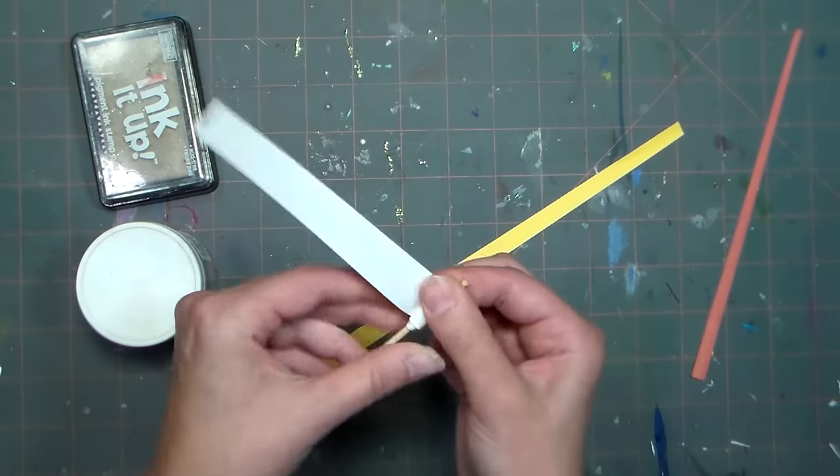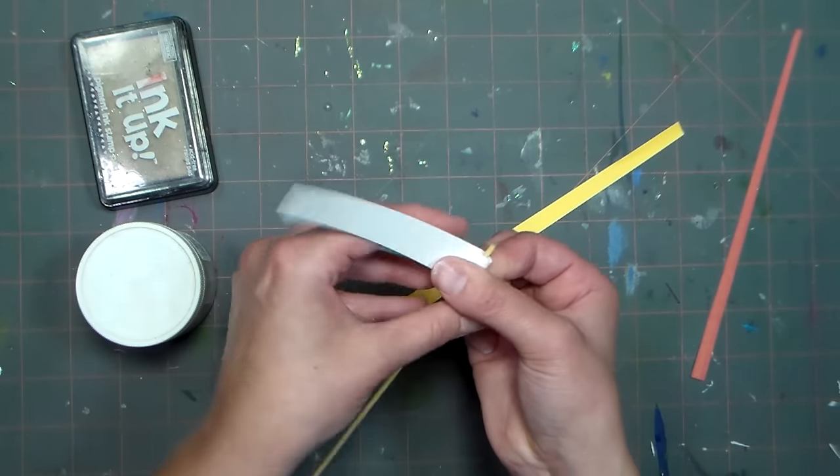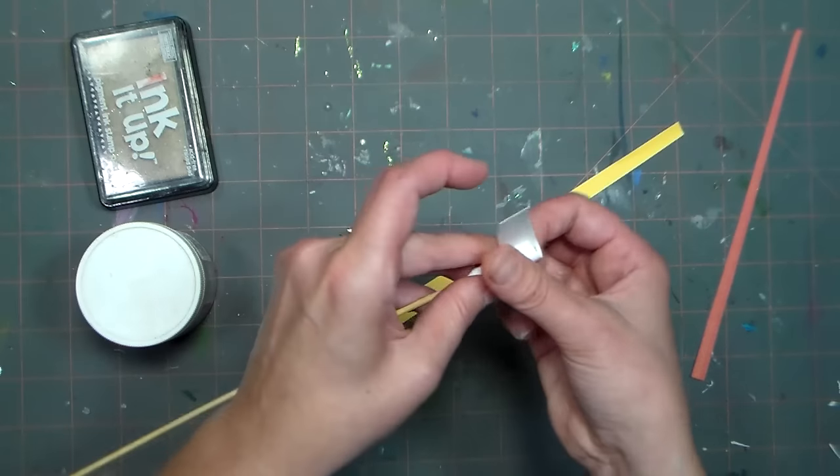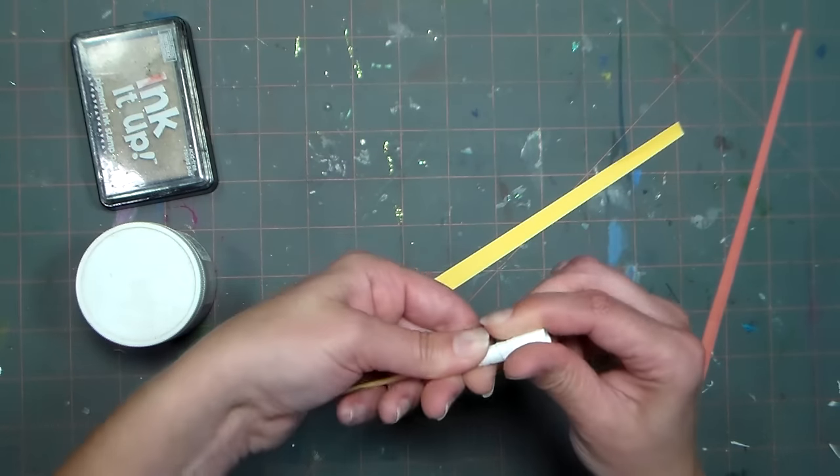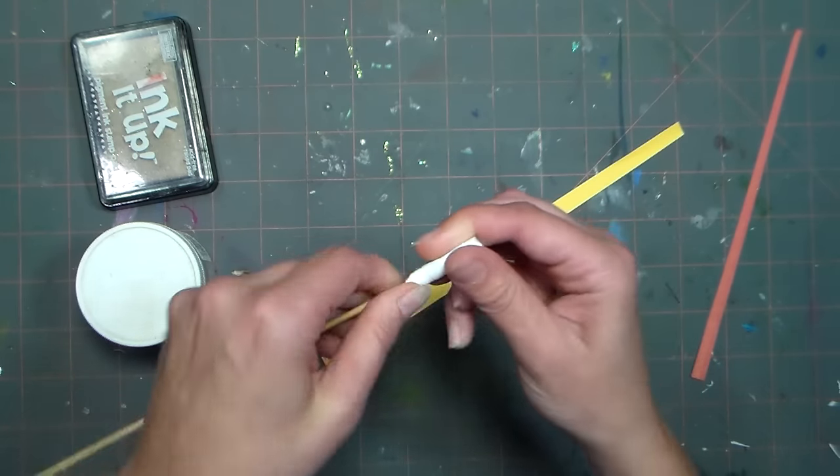Cardstock can be a little difficult to roll up because it's so thick, so if you want to do regular paper you can. If you're using thinner paper you're going to end up with a skinnier bead, so you might need a longer piece.